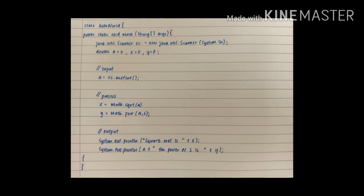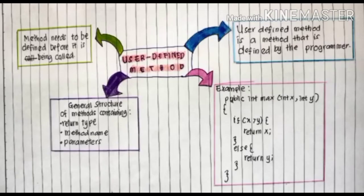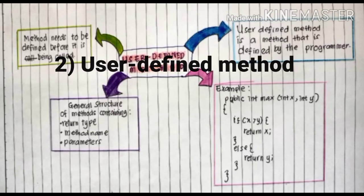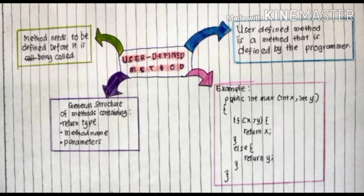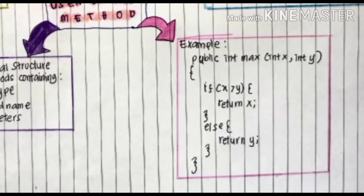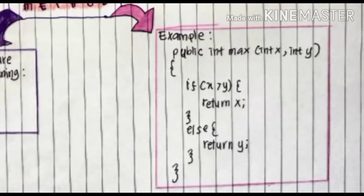The second type of method is user-defined methods. User-defined method is a method that is defined by the programmer. Method needs to be defined before it is being called. The general structure of method contains return type, method name, and parameters. So as you can see here, this is the example of Java coding for user-defined method.